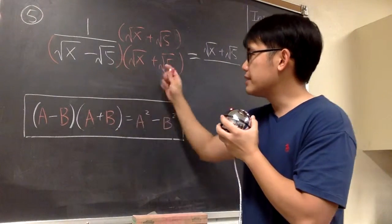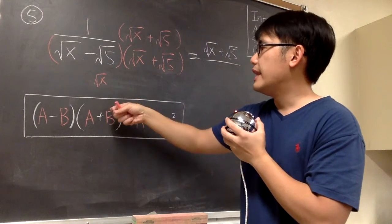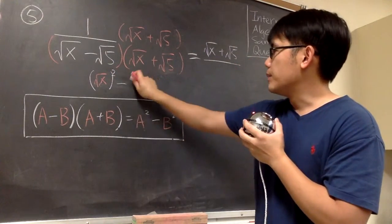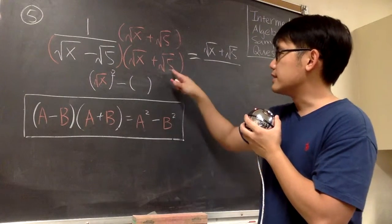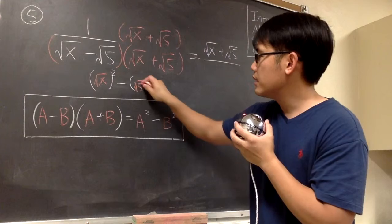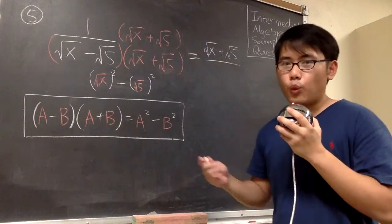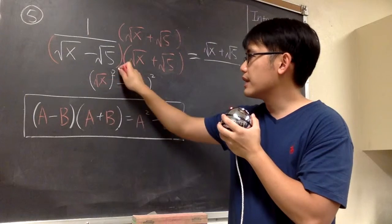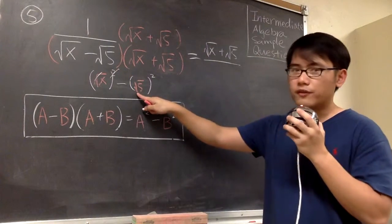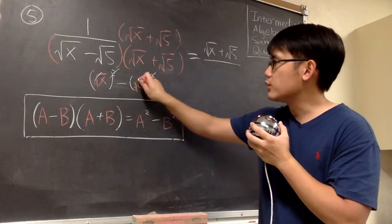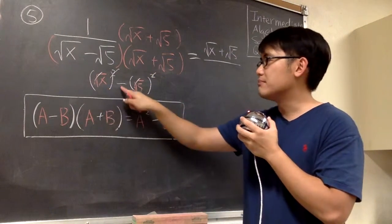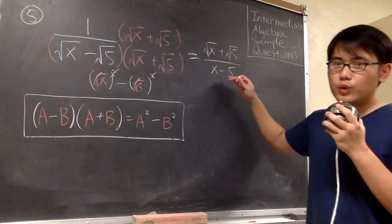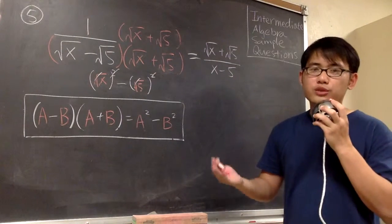So, if we multiply this out, all we need to do is take square root of x and square that — that's the a squared part — and then subtract. The b is the square root of 5, so we put that in parentheses and square it. Now we can see why we use this formula: the square root of x and the square cancel each other out. Likewise, for the square root of 5, the square root and the square cancel each other out. Therefore, we get just x minus 5 in the denominator. As a result, we will have no square root in the denominator — this is what it means to rationalize the denominator.